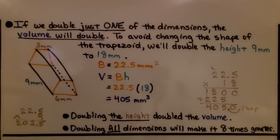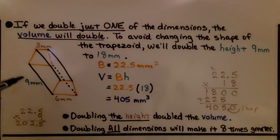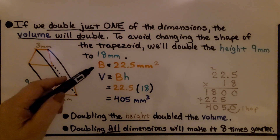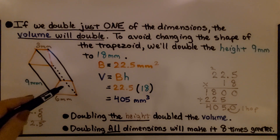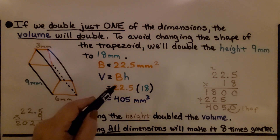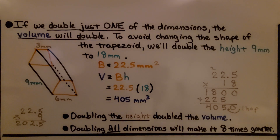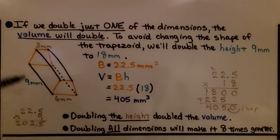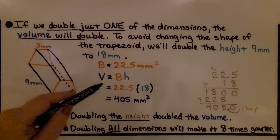If we double just one of the dimensions, the volume will double. To avoid changing the shape of the trapezoid, we'll double the height — the nine millimeters — to 18 millimeters. Our base area remains 22.5 millimeters squared, but now the height is 18. We multiply 22.5 times 18 and get 405 millimeters cubed. Doubling the height doubled the volume. Doubling all dimensions would make it eight times greater, but doubling only the height doubles the volume.